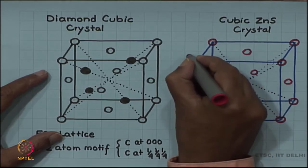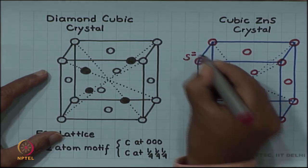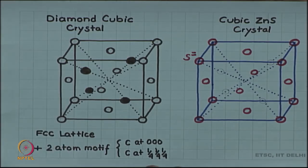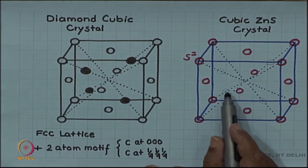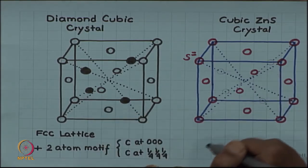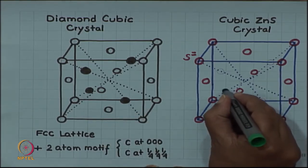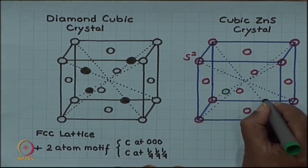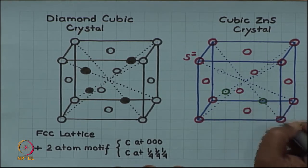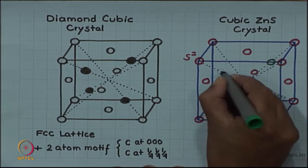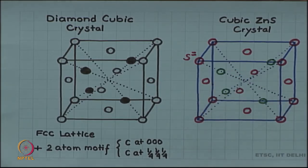This completes the locations of the sulfide ions. The zinc ions are located exactly on the body diagonals just like in the case of diamond. On two body diagonals they are one fourth up from the bottom, and on the other two body diagonals they are three fourths up from the bottom.